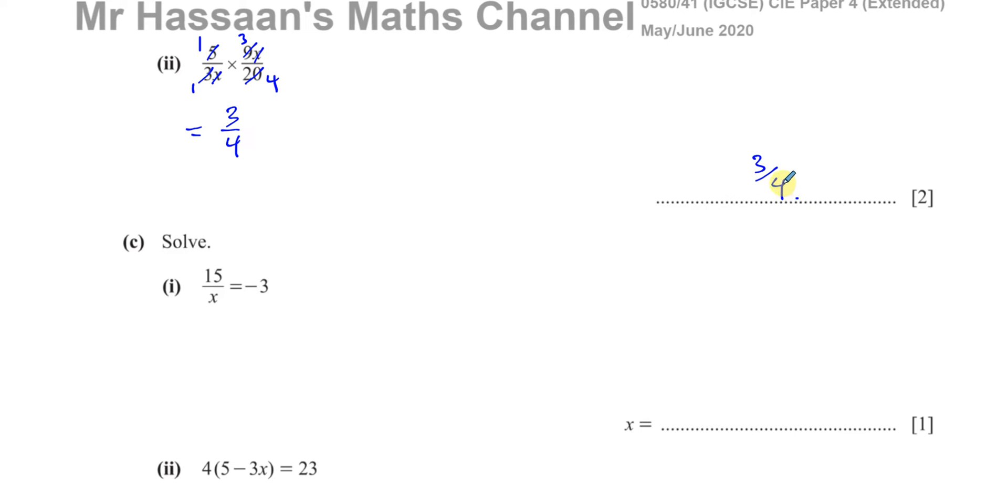Actually what you're doing here, if I just go through that again, you don't have to write this out but just for your understanding, you've got 5 over 3X times 9X over 20. This is like 3 times 3X over 5 times 4X. So then you cancel out the common factors 3X and 3X, 5 and 5, and you're left with 3 over 4. So there's how you deal with that.